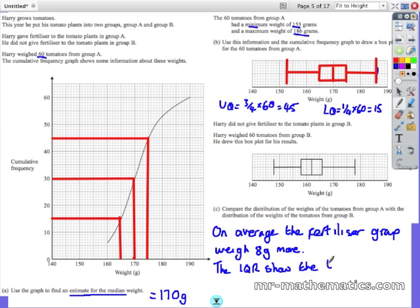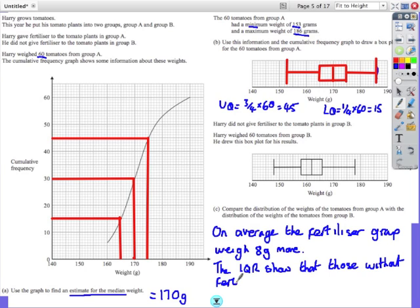So the interquartile range shows the group without the fertiliser were more consistent in weight since the interquartile range is narrower.